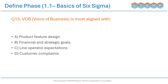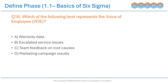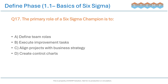Question 15: Voice of Business (VOB) is most aligned with? Question 16: Which of the following best represents the Voice of Employee (VOE)? Question 17: The primary role of a Six Sigma Champion is to?